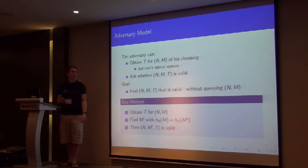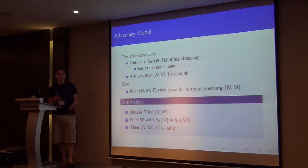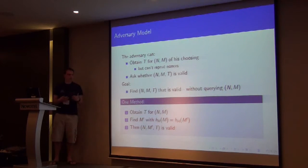One way that he could do that is to start with some nonce, some message, get a valid tag for it, find a hash collision, and then just substitute m for m prime, and there's a valid tag, a valid tuple.